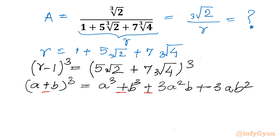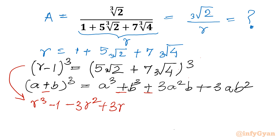Let us apply the formula. On the left hand side I will write R³ minus 1, then minus 3R² and then plus 3R. On the right hand side, (5 cube root 2)³ will become 125 times 2, which is 250.